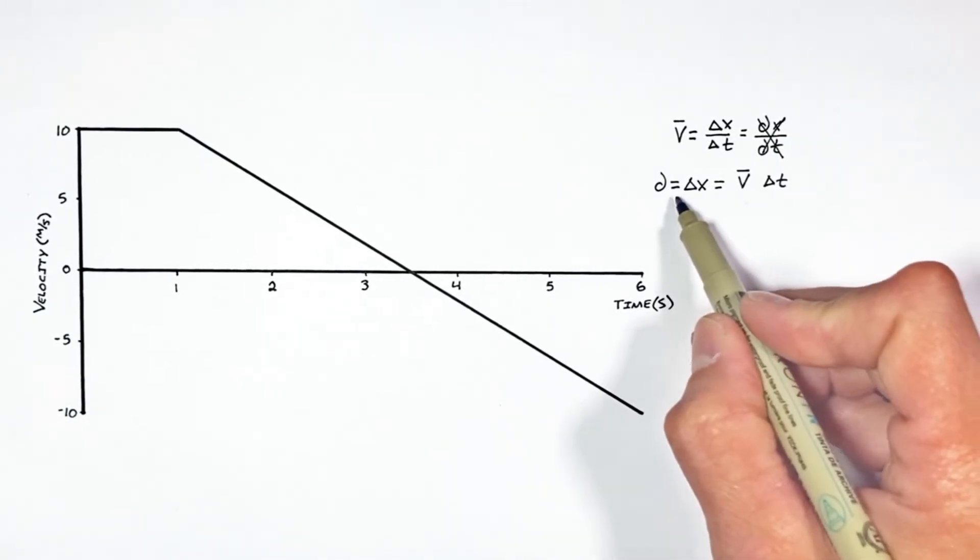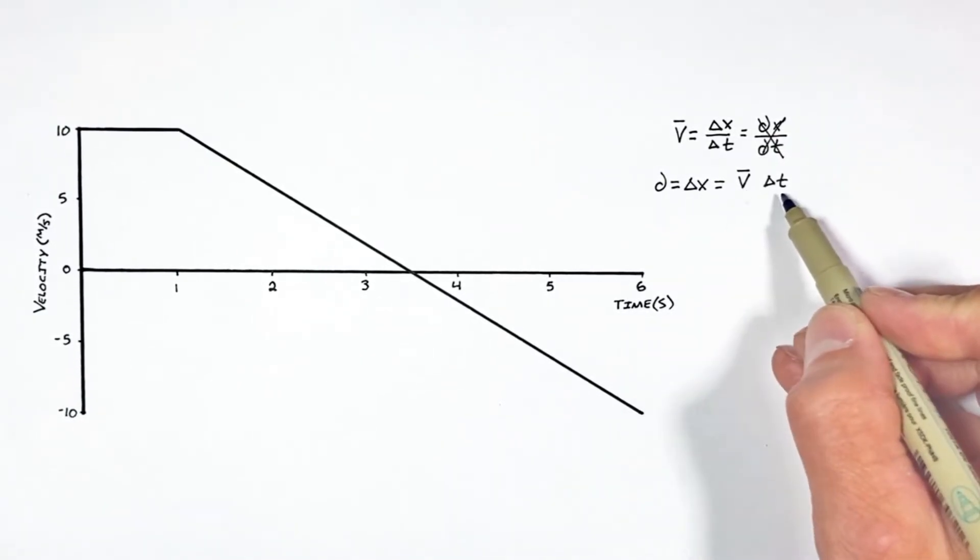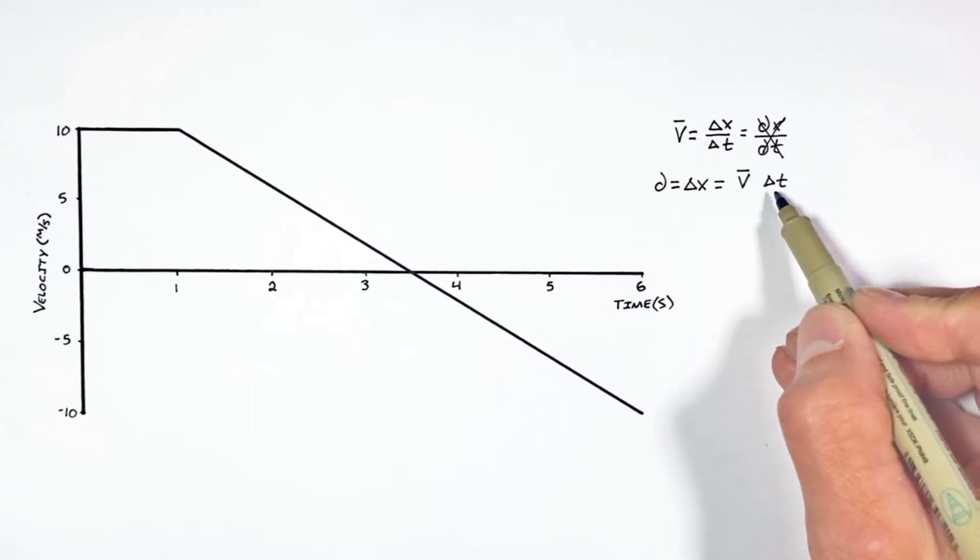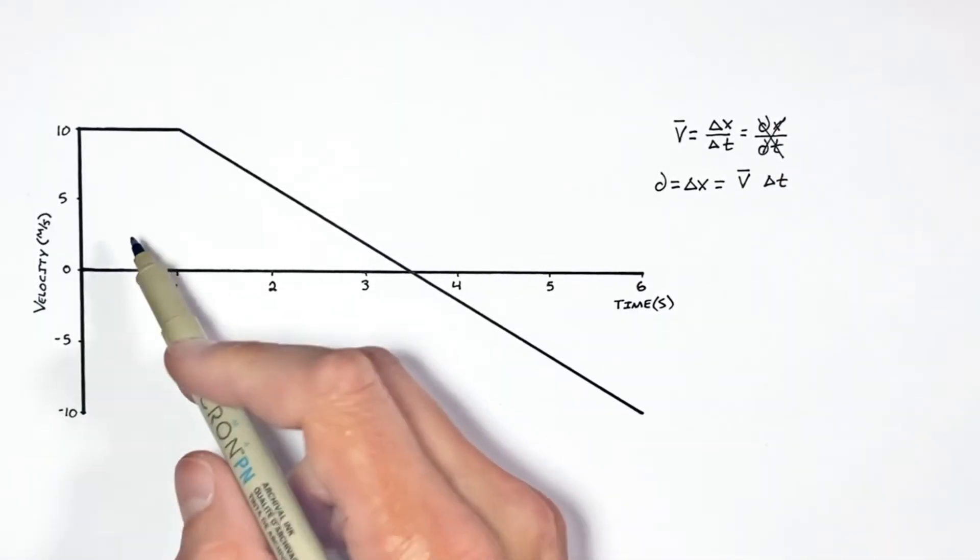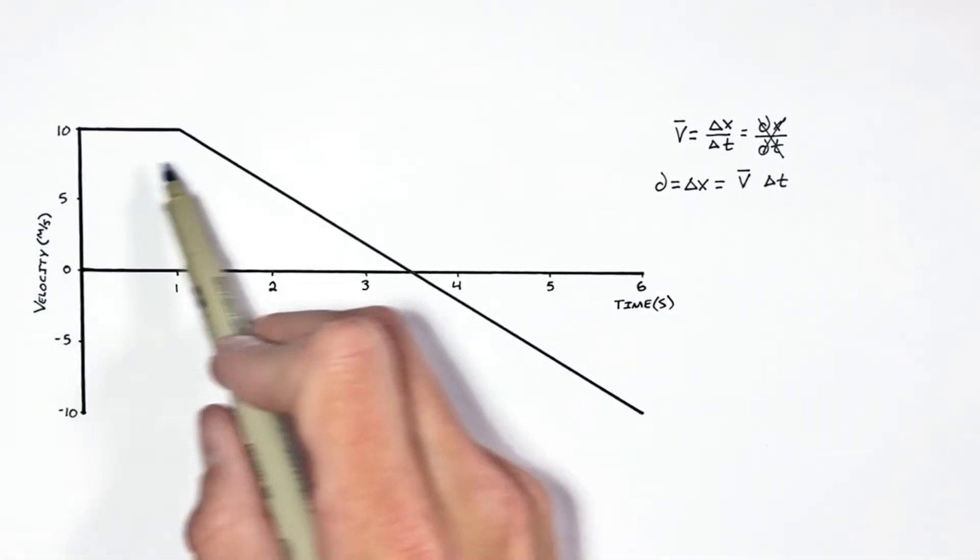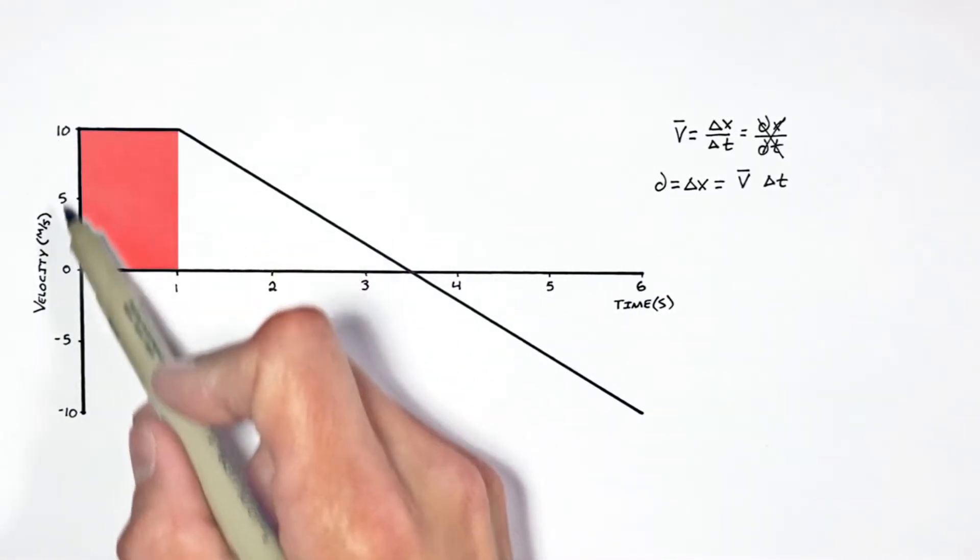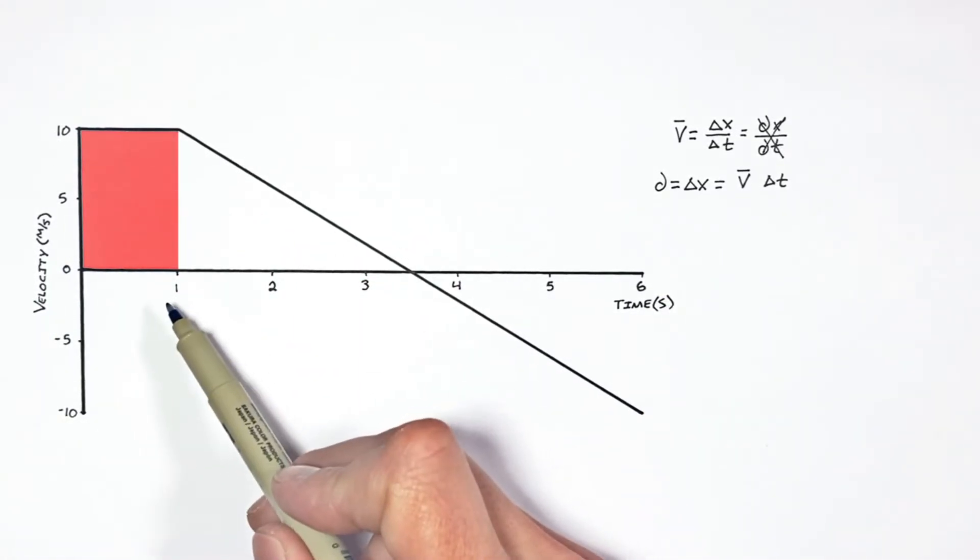You see, according to this equation, a displacement is equal to the velocity multiplied by time. And to see how this equation is useful on our graph, I want to look not at the entire graph all at once. I want to look at just a little corner of this graph over here.